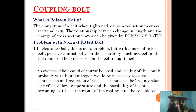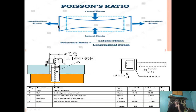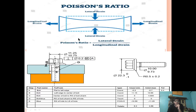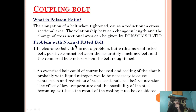So what is Poisson's ratio? The elongation of a bolt when tightened causes a reduction in cross-sectional area. As we know, if we stretch anything it will cause a reduction in cross-sectional area. The relationship between the change in length and the change in cross-sectional area can be explained by Poisson's ratio. Poisson's ratio is the ratio of lateral strain to longitudinal strain.